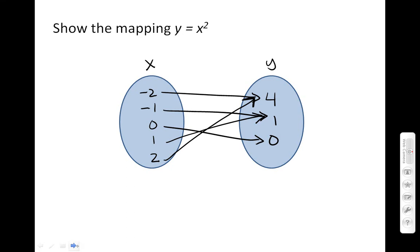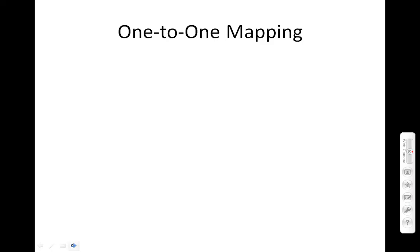It's a pretty simple concept. It's just a way of showing how two sets of information connect. There are some special types of mappings.